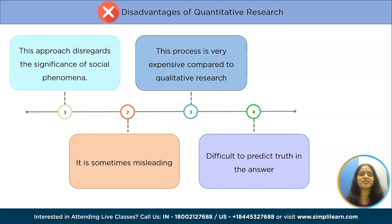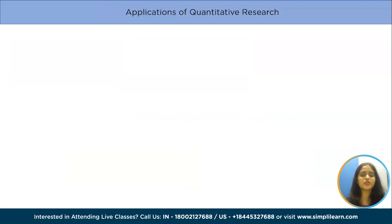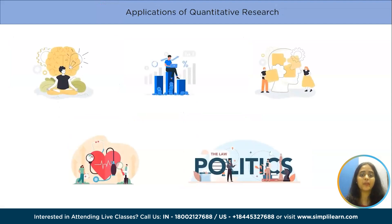After learning about quantitative research, one thing is clear: it has many applications. It is used in psychology, economics, demography, sociology, marketing, health and development, gender studies and political science. By definition, in mathematical sciences such as physics it is also quantitative; however, the context in which the term is used here is different.